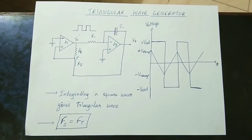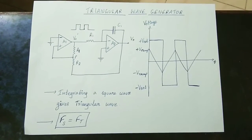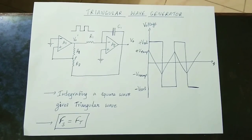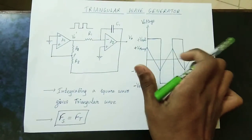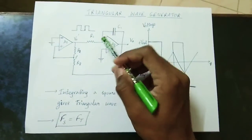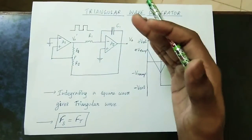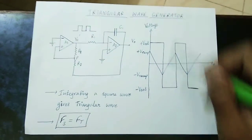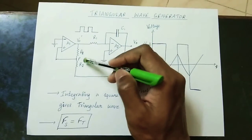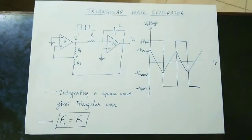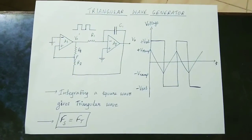The square wave and the triangular waveform have equal amplitude. If you increase the amplitude, the values of R1 and C1 affect the triangular waveform. The triangular wave amplitude can be verified by the square wave through R2, R3 values.